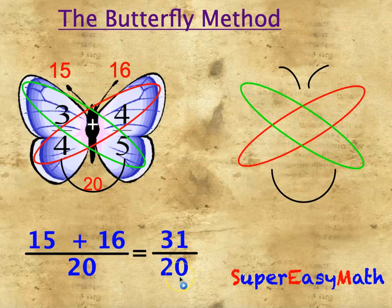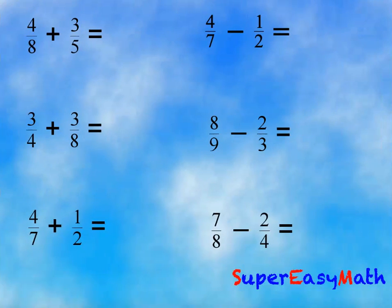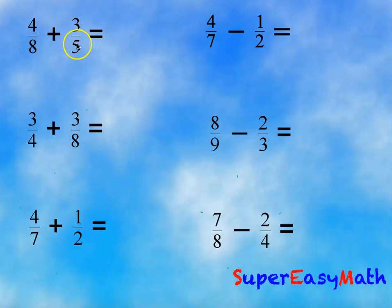Let's take some examples. 4 over 8 plus 3 over 5. So 5 times 4 equals 20, and 8 times 3 equals 24, divided by 8 times 5, which is 40. So 20 plus 24 equals 44 divided by 40.